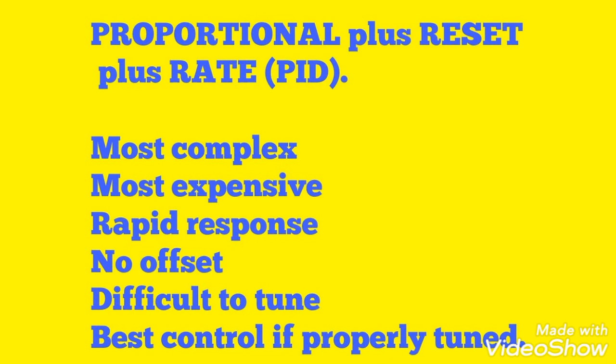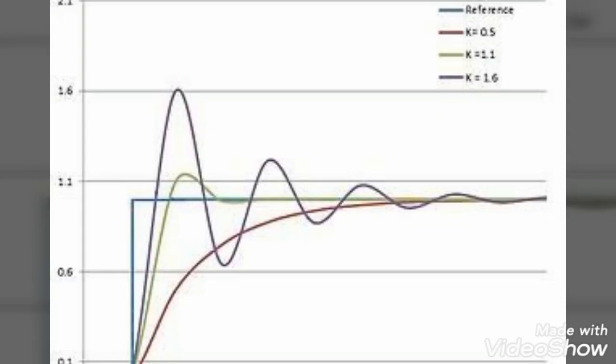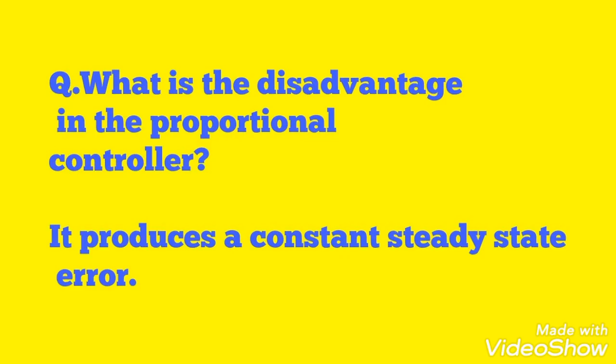Here you can see the proportional wave, the integral, and the derivative — the difference when using only proportional, proportional with integral, and PID. What is the disadvantage of the proportional controller? It produces a constant steady-state error because it is changing the input with the change in output, so there is a steady error.